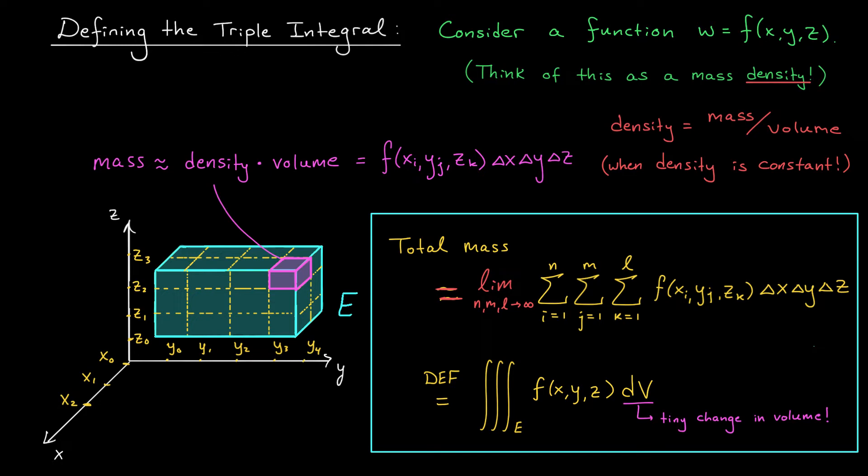In general, triple integrals don't compute volumes. In the double integral case, we could think of the integral as computing a volume, or signed volume, under the graph of our function z equals f(x,y). But now our functions have three inputs and one output, meaning their graphs live in a four-dimensional space. So we can't think of triple integrals as computing a volume in the same way we think of a double integral as computing a volume. Some of our geometric interpretation is lost.